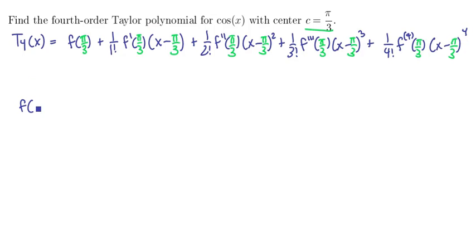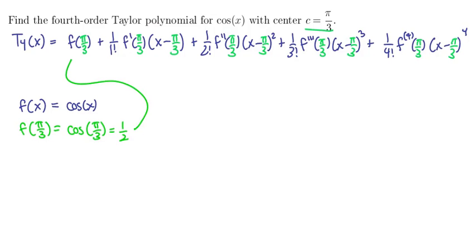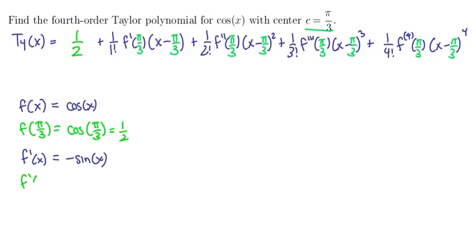Now let's work on the coefficients. Our function is cosine of x. Evaluating at pi over 3: f(pi/3) = cosine of pi over 3, and cosine of 60 degrees is 1 over 2. Next, the first derivative of cosine is negative sine of x. Evaluating at pi over 3 gives negative sine of pi over 3. The sine of 60 degrees is root 3 over 2, so the first derivative coefficient is negative root 3 over 2.